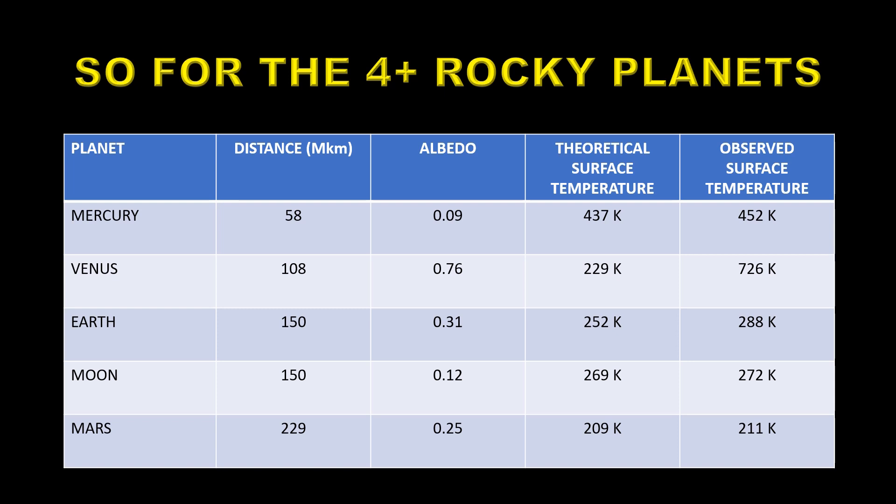When you apply this to Mercury you find that its theoretical temperature should be 437 degrees Kelvin and the observed surface temperature is 452 degrees Kelvin. There is a little bit of a difference there but that's probably within the uncertainty of the temperature of Mercury because we don't have that many observations of it, but that's basically because Mercury has very little atmosphere.